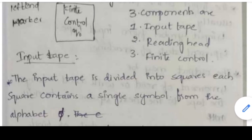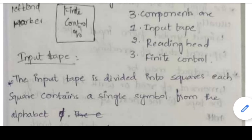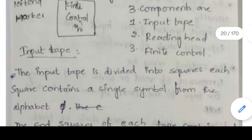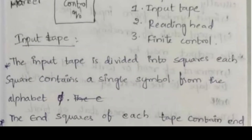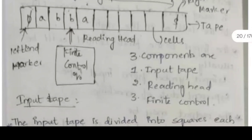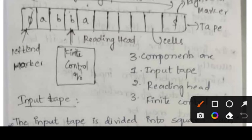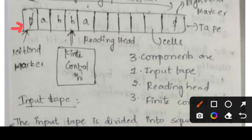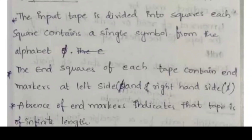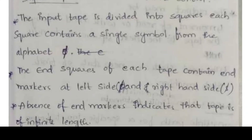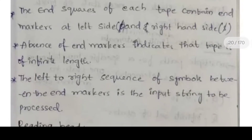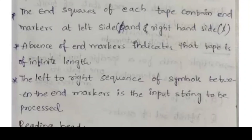There are three components: the input tape, the reading head, and the finite control. The input tape is divided into squares, and each square contains a single symbol from the alphabet pi. The tape starts with pi on the left and ends with a dollar symbol on the right. The absence of end markers indicates that the tape is of infinite length. The left-to-right sequence of symbols between the end markers is the input string to be processed.